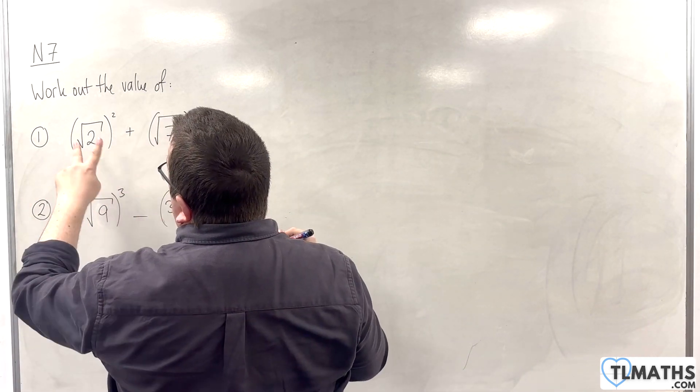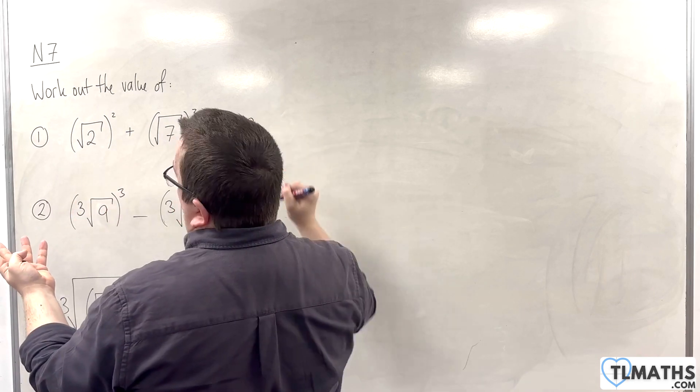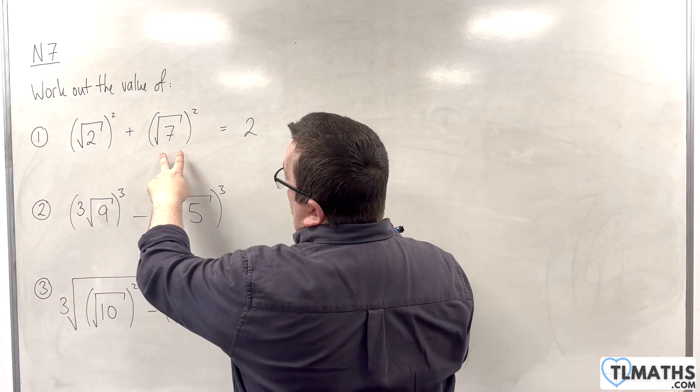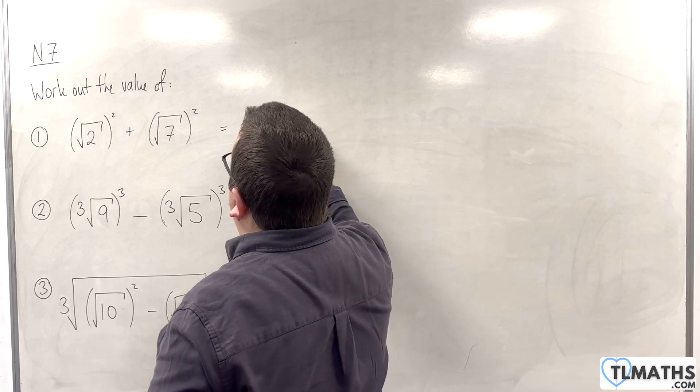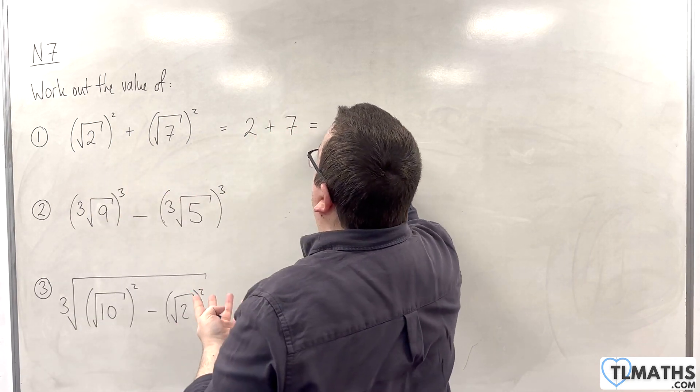So, if I square root 2 and then square it, I'm going to be left with 2. And if I square root 7 and square it, I'm going to be left with 7. So, we'll have 2 plus 7, which is 9.